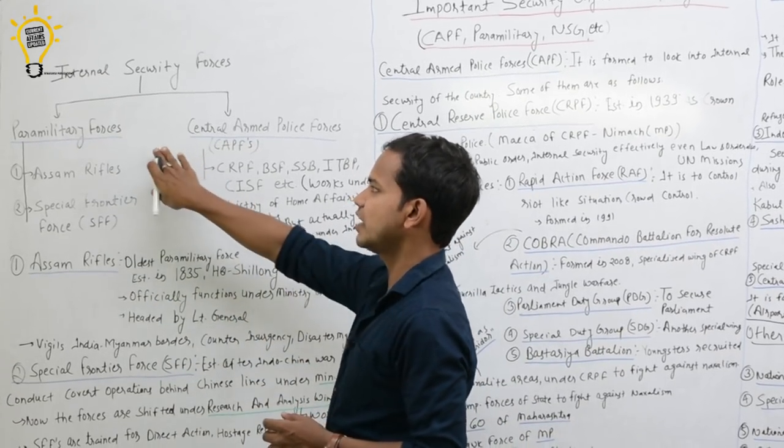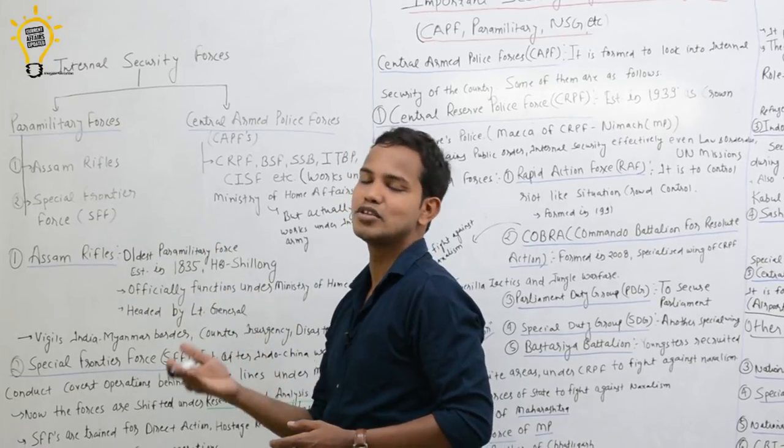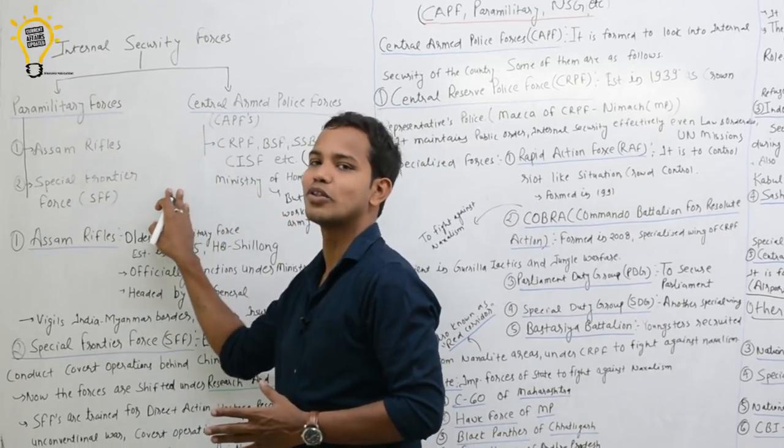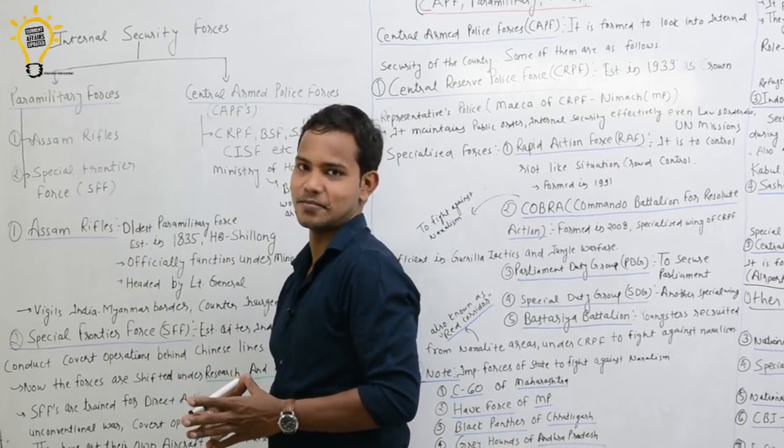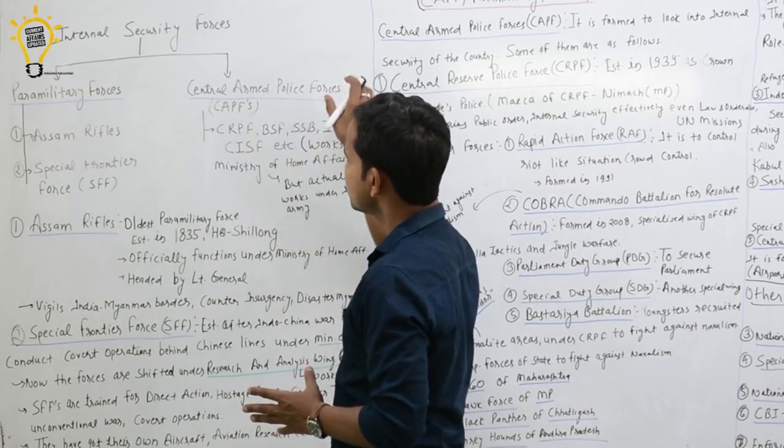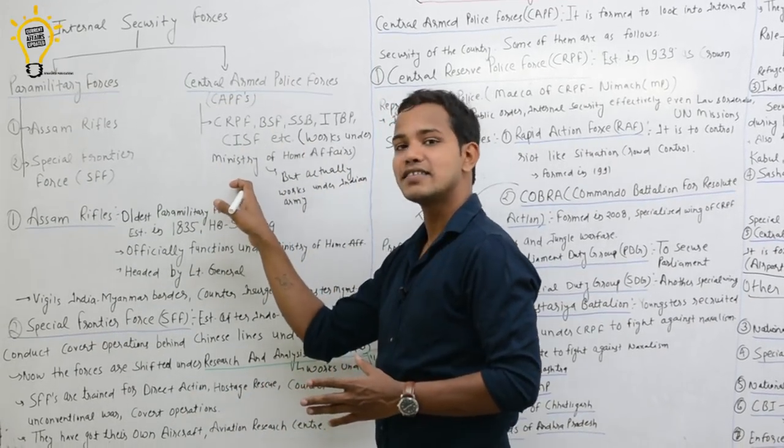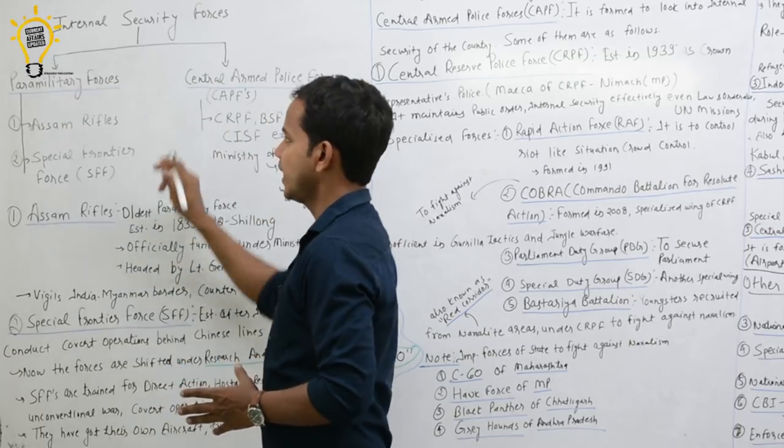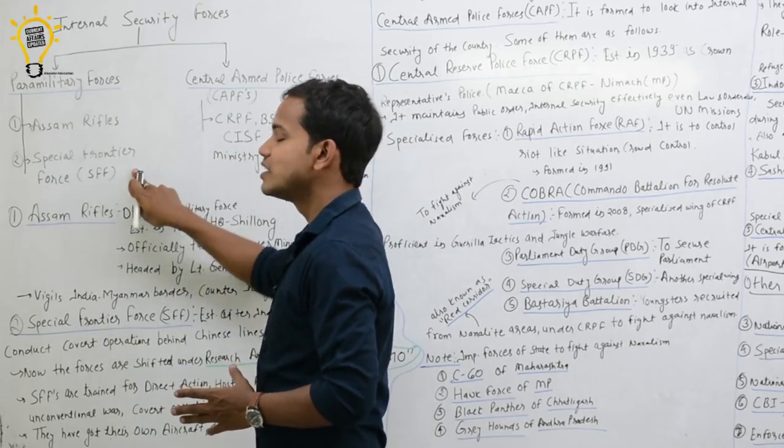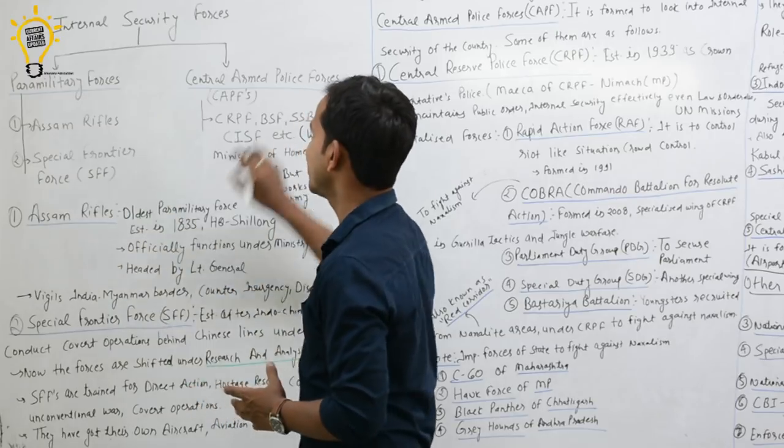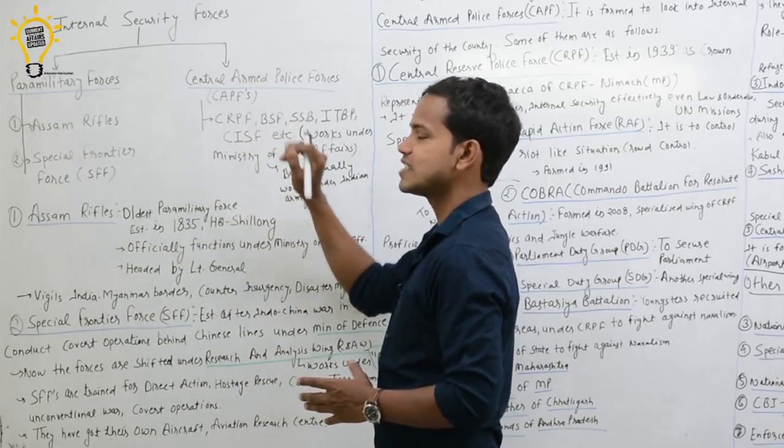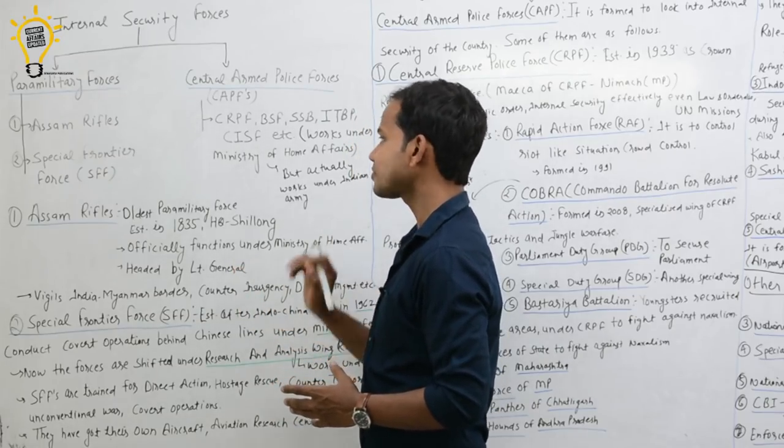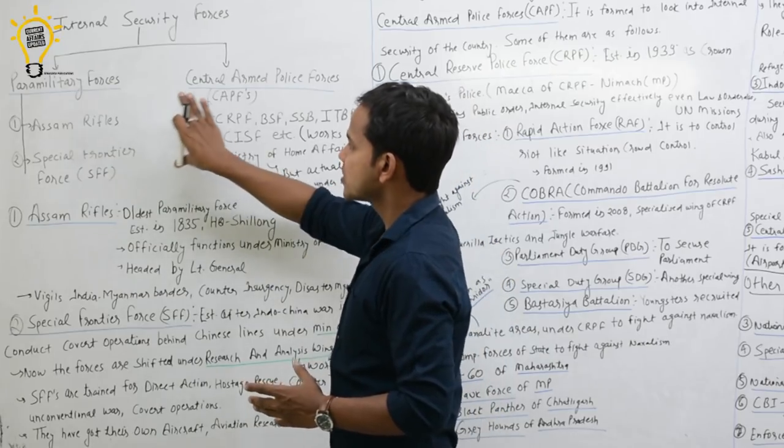Paramilitary forces, you are talking about central armed police forces. There is a basic difference. Even newspapers say the wrong thing. Paramilitary forces are those forces normally headed by armed forces. At the same time, central armed police forces are headed by senior IPS officers at director general level.